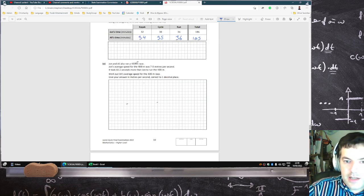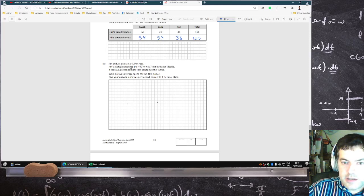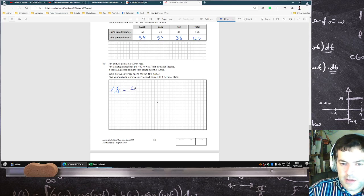John and Ali ran a 400m race. John's average speed for 400m is 7.8m per second. It took Ali two seconds more. Work out Ali's average speed. So Ali's average speed, speed is distance over time. We have to figure out what the time is.